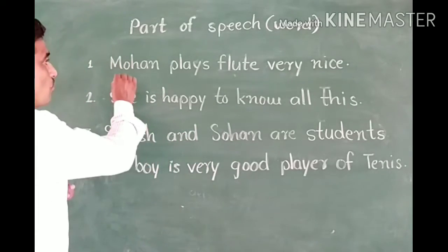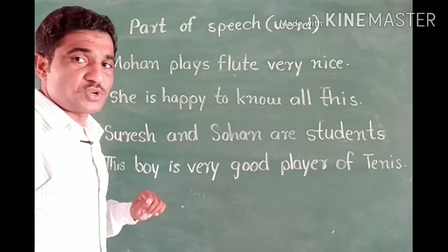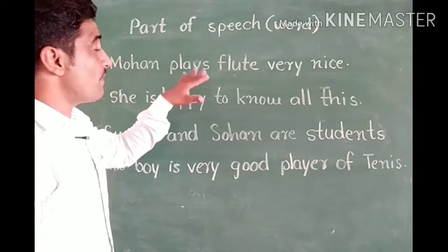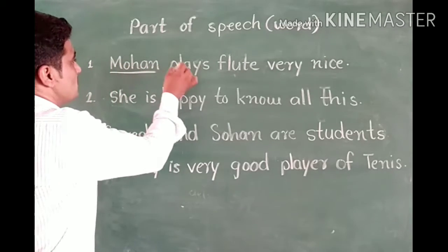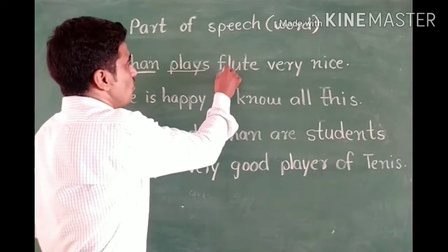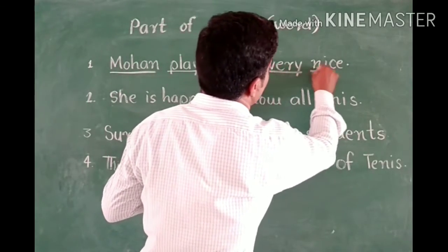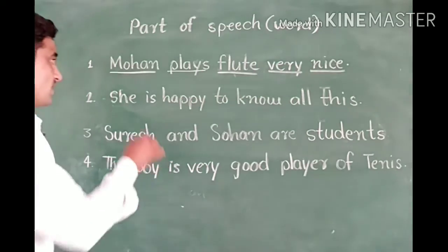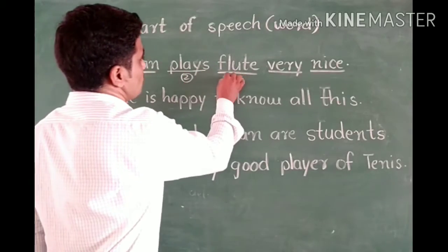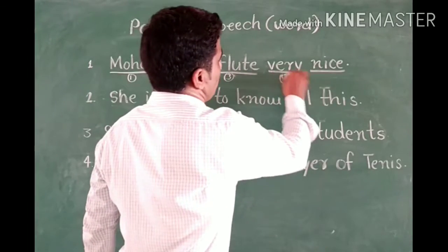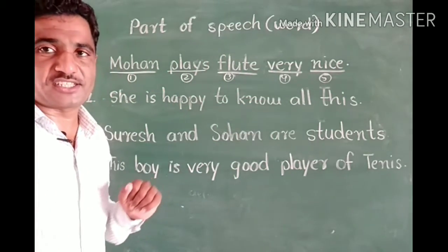Suppose that 'Mohan plays flute very nice.' This is the speech. And the parts of it: Mohan is one part, plays is another part, flute is another part, very is another part, and nice is another part. In this speech there are five parts.